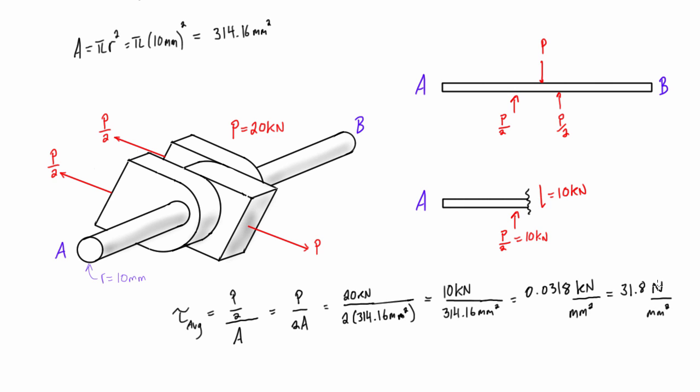the same units as megapascals. So this is going to be equal to 31.8 megapascals, and that is the average shear in between these two members, obviously in the rod. And so if we took the average shear at the point of contact between these two, obviously it's going to be the same. And it's just important to notice: so in this situation of double shear, we're basically getting half